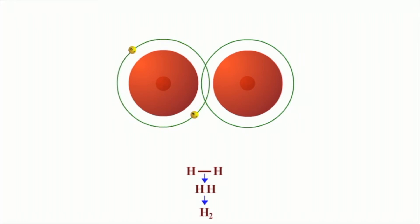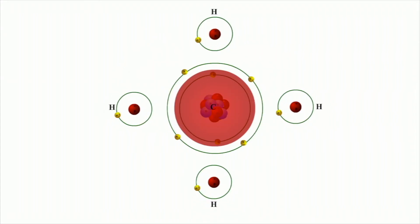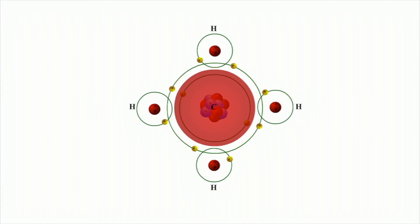Nonpolar covalent bonds are also found in hydrocarbons. For example, a molecule of methane has four carbon-hydrogen single covalent bonds. The electrons are shared equally. Methane and other nonpolar covalent bonds are hydrophobic and do not dissolve in water.